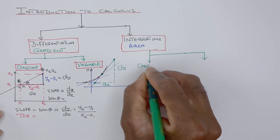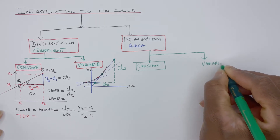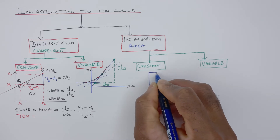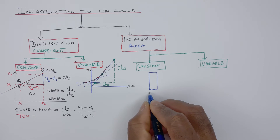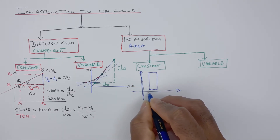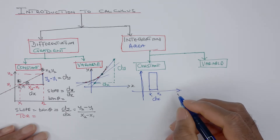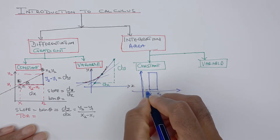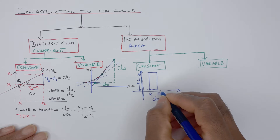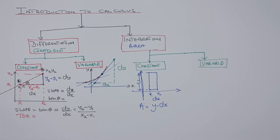For constant area, if you have a rectangular object and you want to find its area — with x1 and x2 on the x-axis — the difference between x1 and x2 is dx, the differential of x. The height from bottom to top is y. The area of a rectangle is height times width, so area A equals y times dx. That's how you find the area of a constant object.